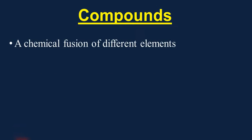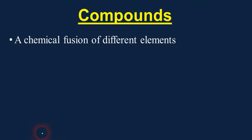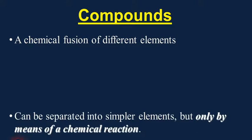Let's talk about the next most complex type of matter, which would be compounds. Compounds are when we have a chemical fusion of different elements. To have a compound, you have to have two or more elements chemically fused together. It is possible to separate a compound into simpler elements, but you can only do this by means of a chemical reaction. Since the atoms are fused together chemically, you can only separate them chemically.